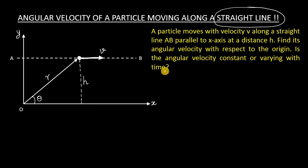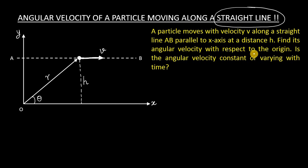The question says: a particle moves with velocity v along a straight line AB, parallel to the x-axis at distance h. So from the x-axis, this line AB is at a distance h. Find the angular velocity of this particle with respect to the origin O. Is the angular velocity constant or varying with time?